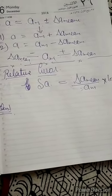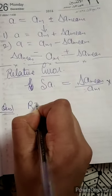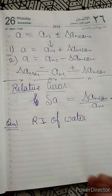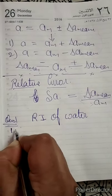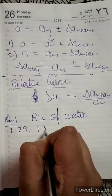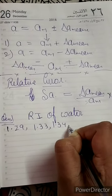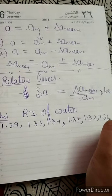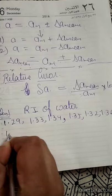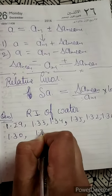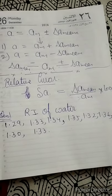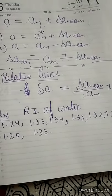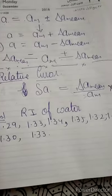Let's take a quick example so you will understand. Let's consider the refractive index of water. One student measures the refractive index of water and calculates values: 1.29, 1.33, 1.34, 1.35, 1.32, 1.36, 1.30, and 1.33. The question asks us to calculate the mean value, absolute error, relative error, and percentage error.